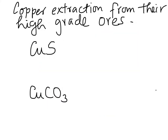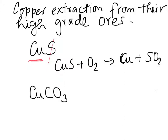Now let's look at how copper is extracted from its high grade ores. For copper sulfide, simply removing the sulfur gives us the copper we need. The method involves heating copper sulfide very strongly in air containing oxygen, producing copper and sulfur dioxide gas. The copper obtained at this stage is impure and will need purification later. This method is called smelting.